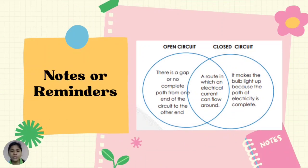Remember: open circuit means there is a gap or no complete path from one end of the circuit to the other end. While a closed circuit makes the bulb light up because the path of electricity is complete. Both open circuit and closed circuit are routes in which an electrical current can flow around.